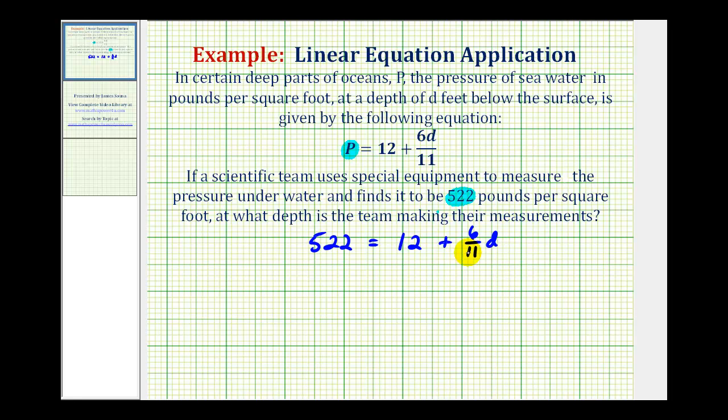Now in order to solve this equation, we want to isolate the variable d, so we want the equation to be in the form of some number equals d. So we first want to undo this positive 12. To do that, we'll subtract 12 on both sides of the equation.